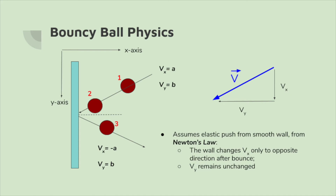However, the Vy, which is the y velocity, would remain unchanged. If the wall was horizontal instead of vertical, the Vy would be reversed and the Vx would remain the same.